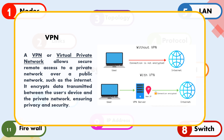A VPN, or virtual private network, allows secure remote access to a private network over a public network such as the internet. It encrypts data transmitted between the user's device and the private network, ensuring privacy and security.